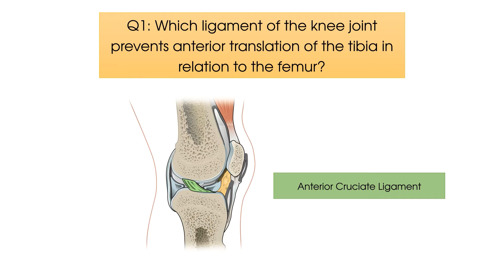And just for your information, it's the exact opposite for the posterior cruciate ligament, which prevents posterior translation of the tibia and attaches to the posterior intercondylar surface of the tibia.